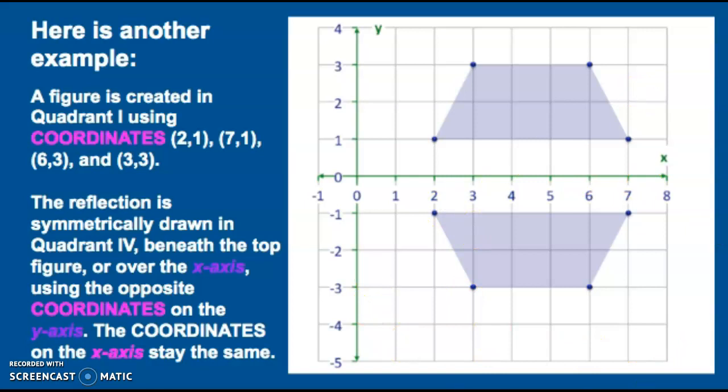The reflection is symmetrically drawn in quadrant 4, beneath the top figure, or over the x-axis, using the opposite coordinates on the y-axis. The coordinates on the x-axis stay the same. As you can see, the coordinate at (2,1) is reflected over the x-axis at (2,-1), and so on and so forth.